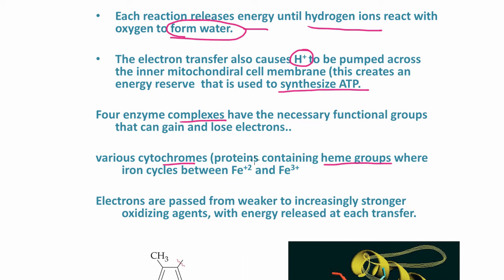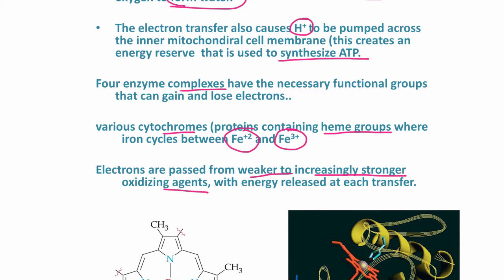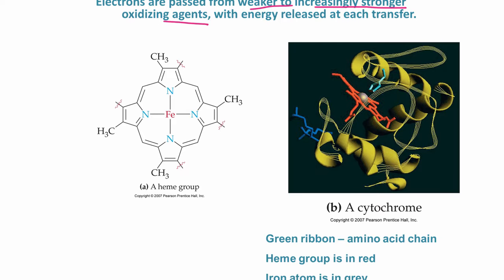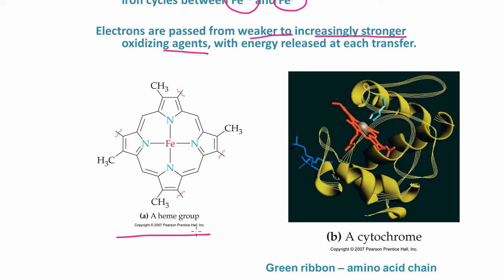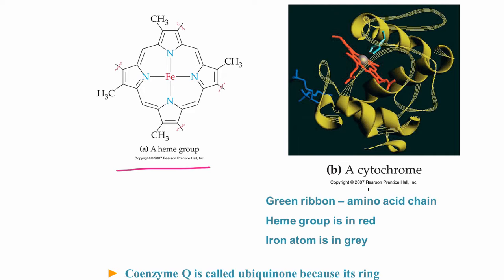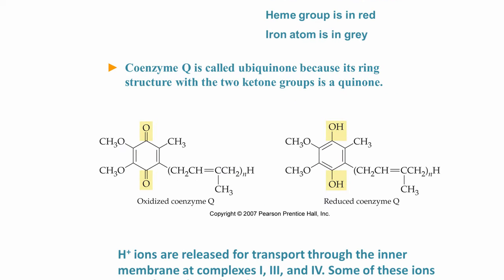There are various cytochromes—proteins that contain heme groups—where iron cycles between iron-2 and iron-3 ions. Electrons are passed from weaker to increasingly stronger oxidizing agents, with a release of energy for each transfer. Here is a heme group and a representation of a cytochrome. The green ribbon is an amino acid chain, the heme group is shown in red, and the iron atom is in gray.